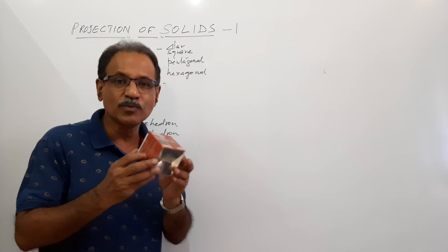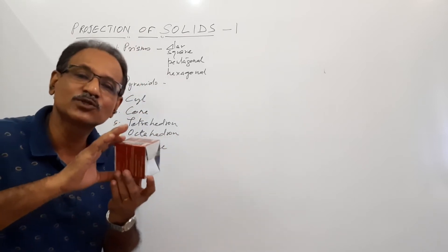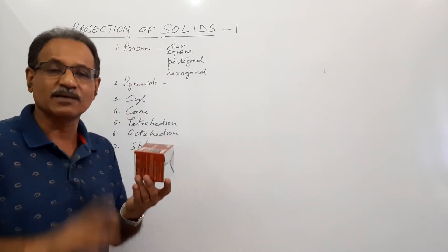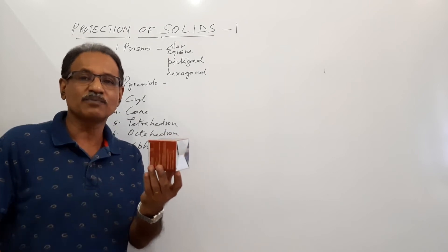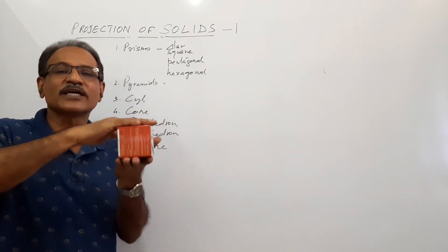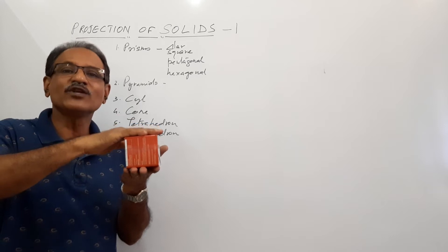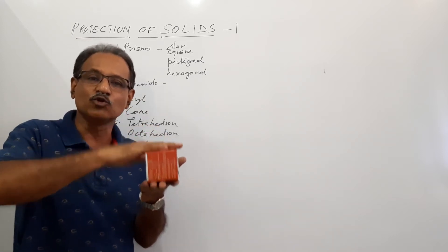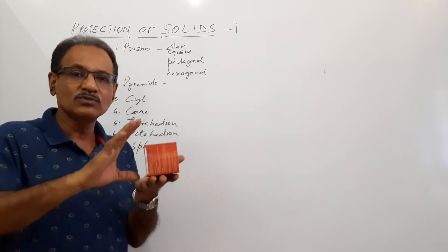Incidentally, this is a cube. What is a cube? Cube is a special square prism where the height of the prism is equal to the side — that is all. It is a particular condition of a square prism where height equals side.